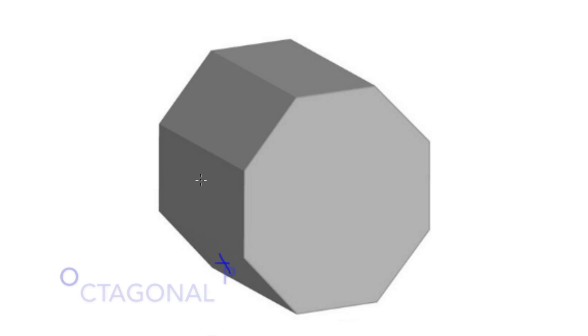This next shape is called an octagonal prism, that's because it's an octagon that's been extruded. We can count, it's got the 8 faces around the edge, and then 2 either end, making 10 altogether.